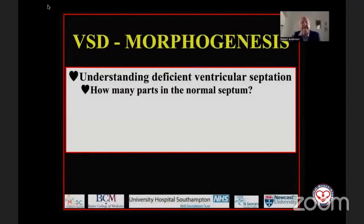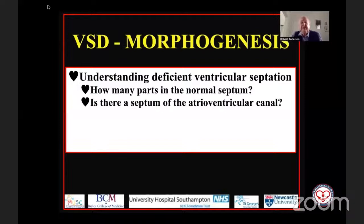In other words, let's talk about the development of the heart, and let's see how that relates to the situation in which the ventricular septum is deficient. We're going to talk about the morphogenesis of deficient ventricular septation. First of all, how many parts do we have in the normal ventricular septum? I'd then like to discuss some controversial issues.